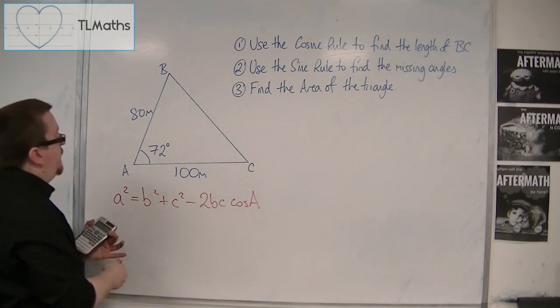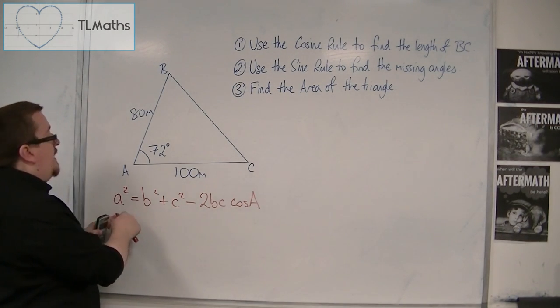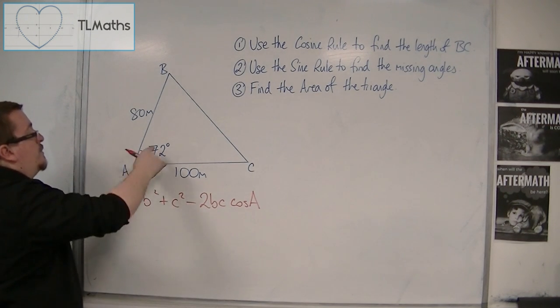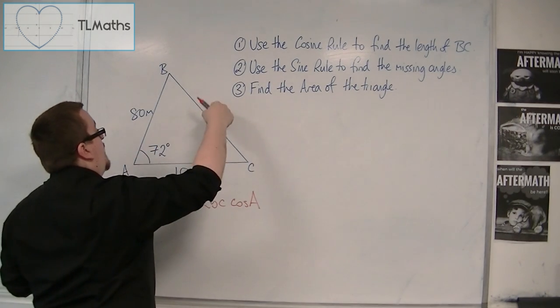But you use this if you're going to find the length of a side. So, we're going to use this. The a, the little a, is the side opposite your big A, effectively. So, if this is the angle that I'm using, then that is my capital A. So, this is the little a that I want to find.